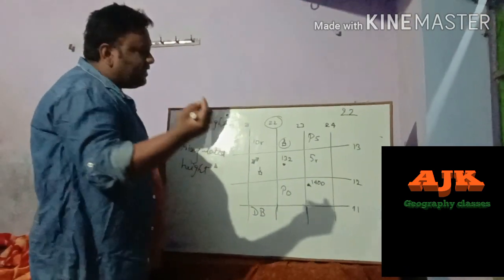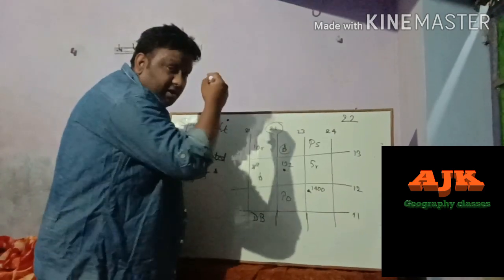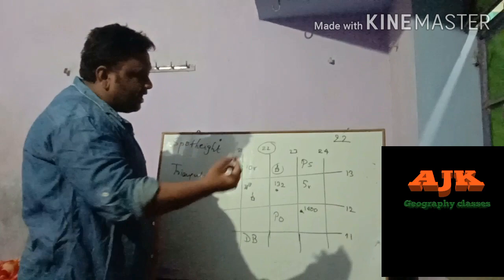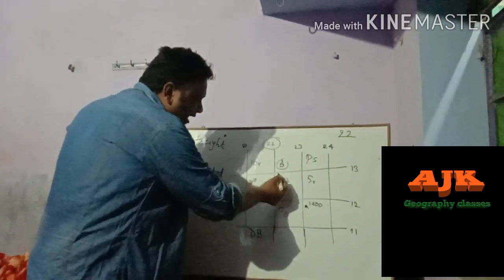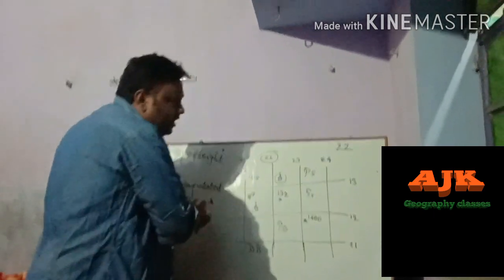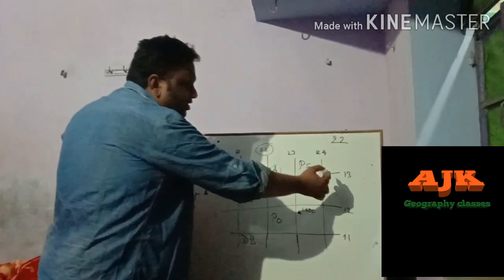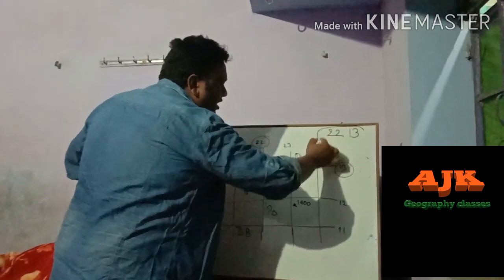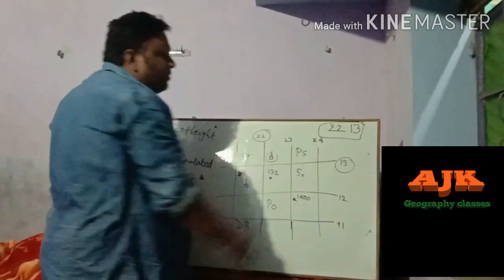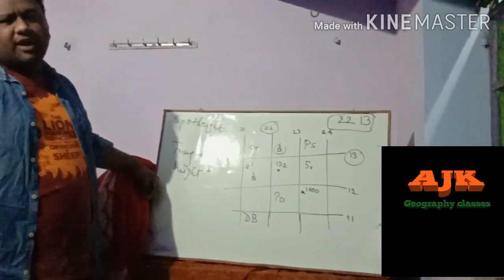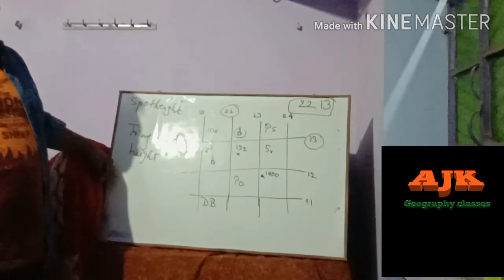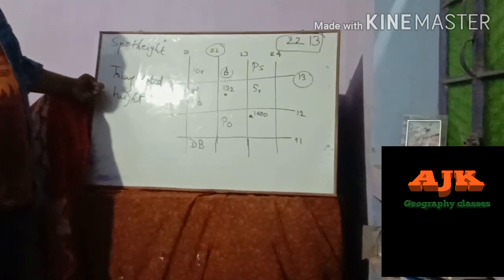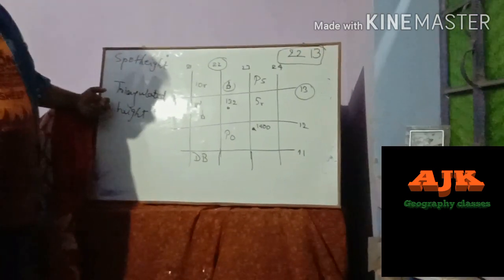Next, find out which horizontal line is running just below that particular place — underneath it. The horizontal line running underneath has the value 13, so here we write '13'. We simply got the four-figure of that particular place as '2213'. Is it simple? If you have any doubts you can comment in the comment section.